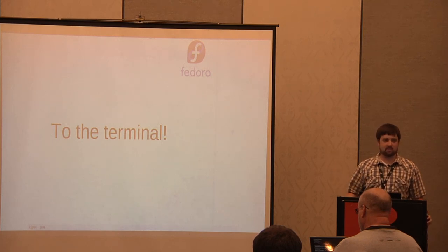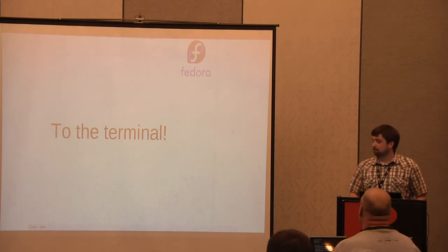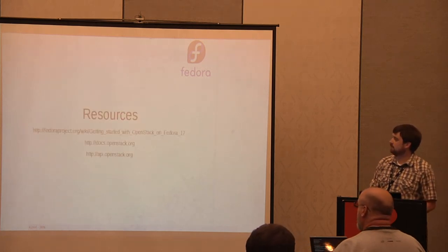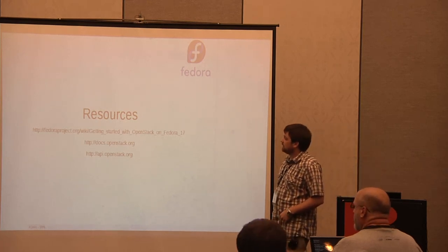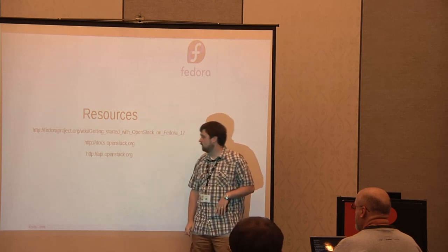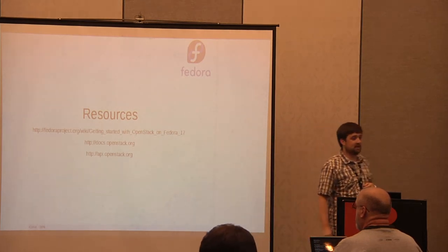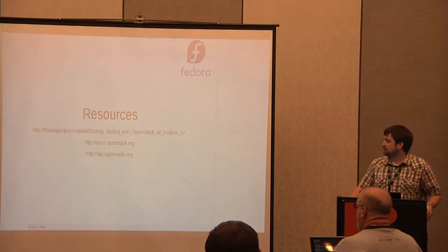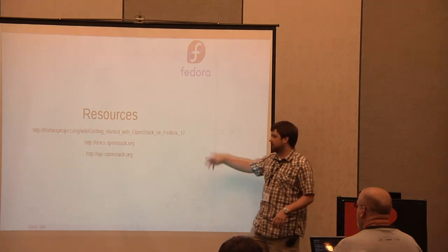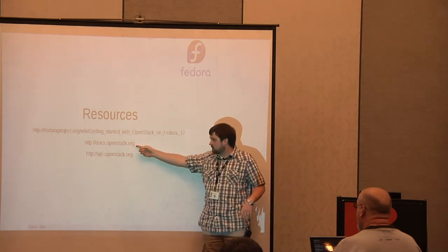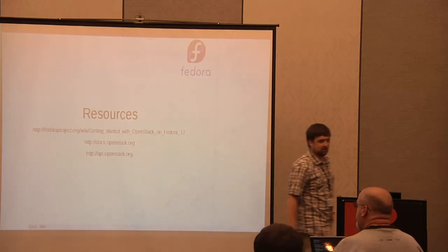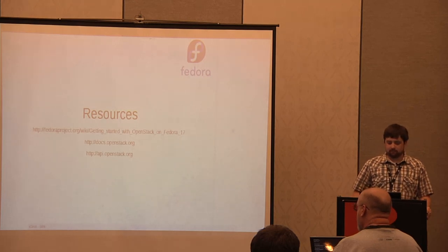I have a script that's just going to do it all, so I don't have to go through and type it all manually. On the Fedora project wiki, the page 'Getting Started with OpenStack on Fedora 17' is where you can find all of these instructions and more. There's also good documentation on the OpenStack site at docs.openstack.org and an API reference at api.openstack.org. Those are good sites to check out.